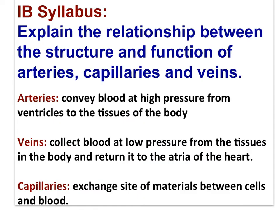Here is the IB syllabus statement that drives this movie. It's important to recognize that the basic definition of arteries and veins serves to address part of this statement. Arteries convey blood at high pressure from ventricles to the tissues of the body. Veins collect blood at low pressure from the tissues in the body and return it to the atria of the heart. Capillaries serve as the exchange site of materials between cells and the blood. With respect to the capillaries, we will have to examine structure carefully to understand their function in the exchange of nutrients, gases, and wastes between the blood and body cells.